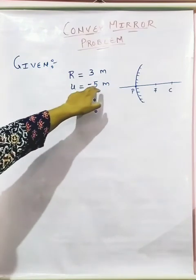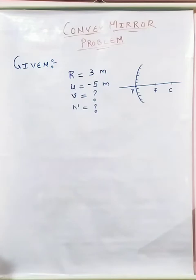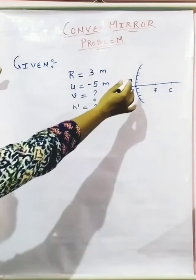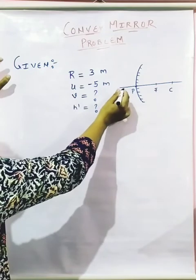If the bus is located at 5 meter, it means the object is my bus, which is behind me 5 meter. So find the position, nature and size of the image. This is my convex mirror for your understanding I have made it.